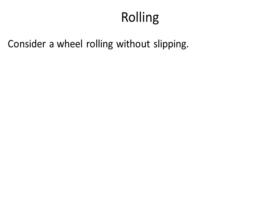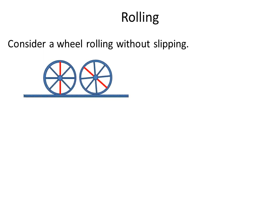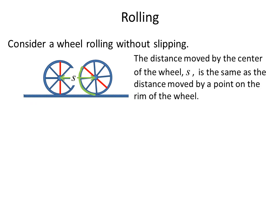In this lecture we look at rolling. Consider a wheel that is rolling without slipping. The wheel rolls and we can compare its position. The distance moved by the center of the wheel is equal to s. This s is the same as the distance moved by a point on the rim of the wheel while it's rotating.